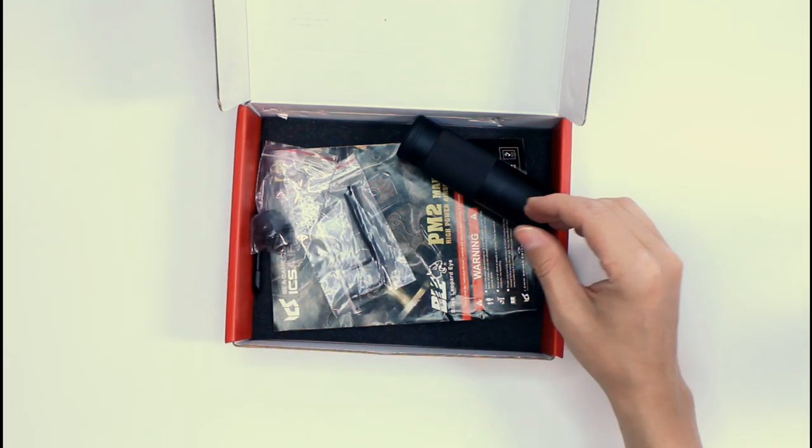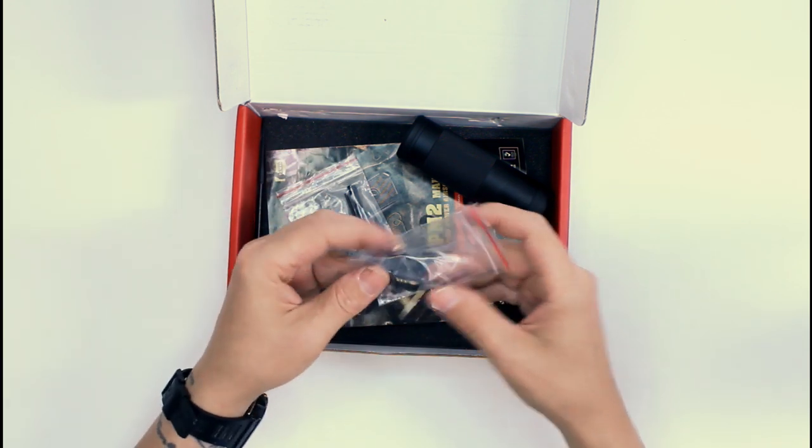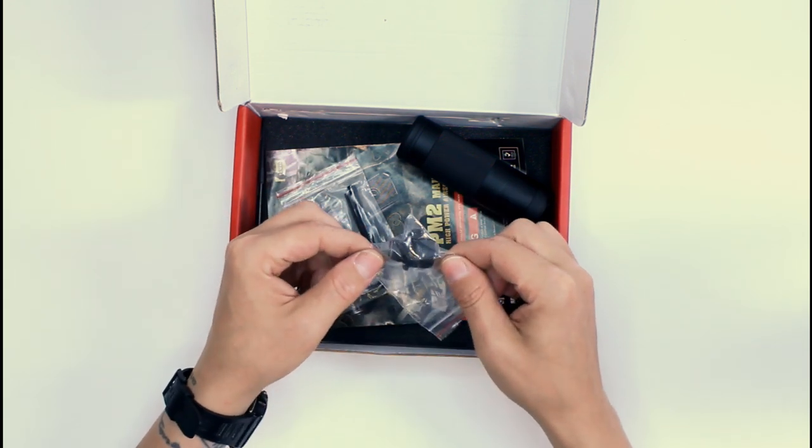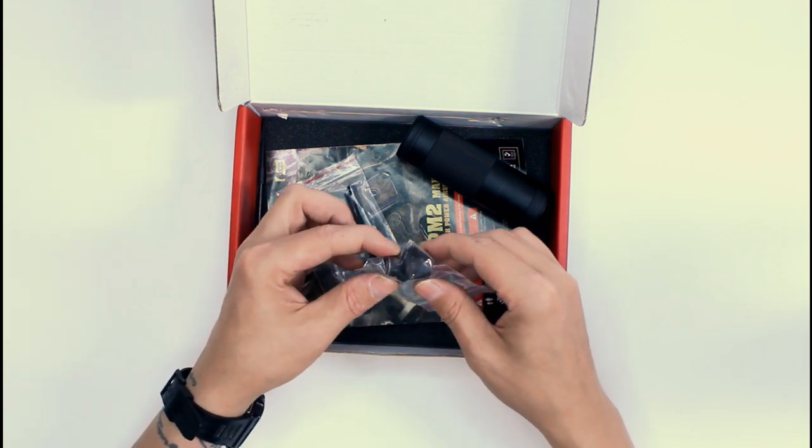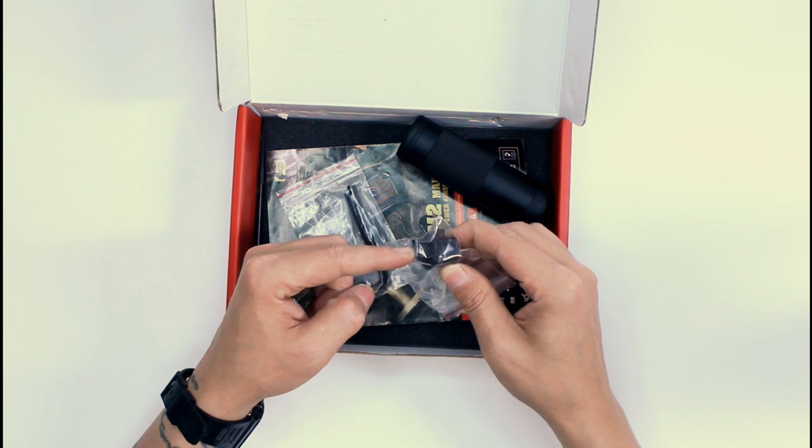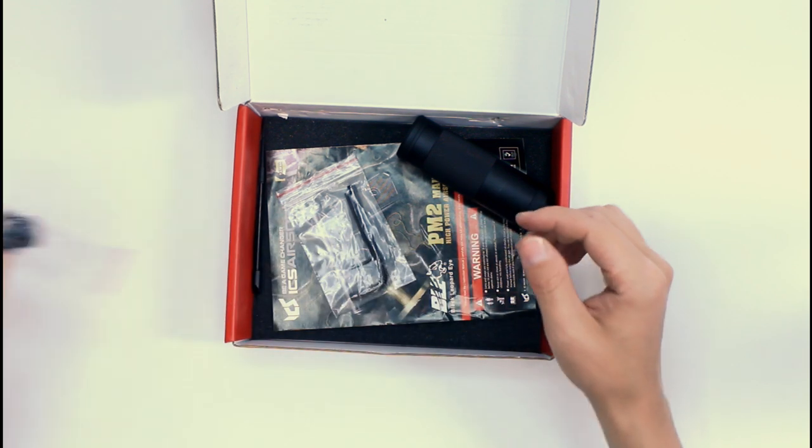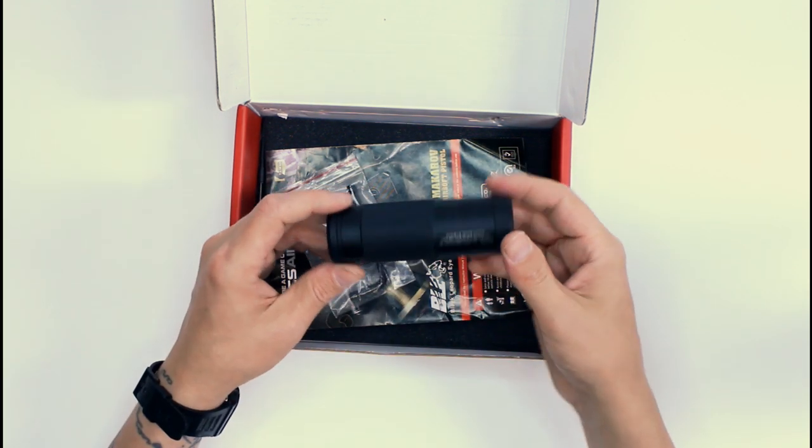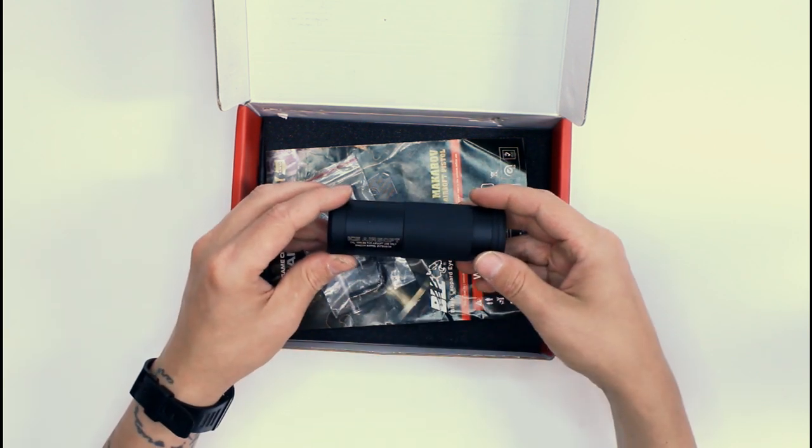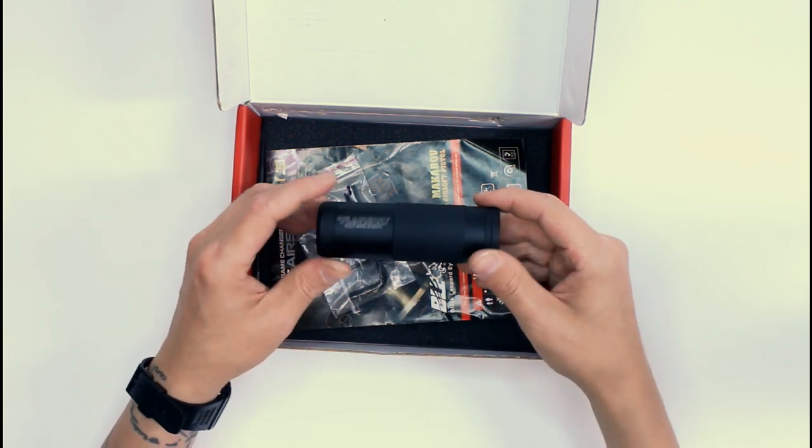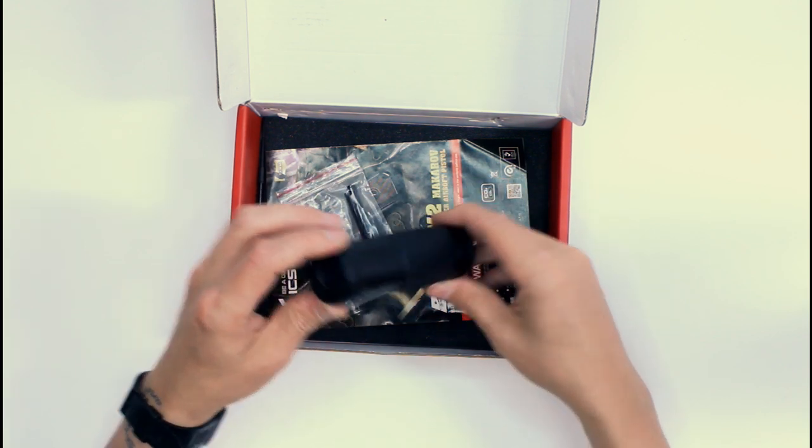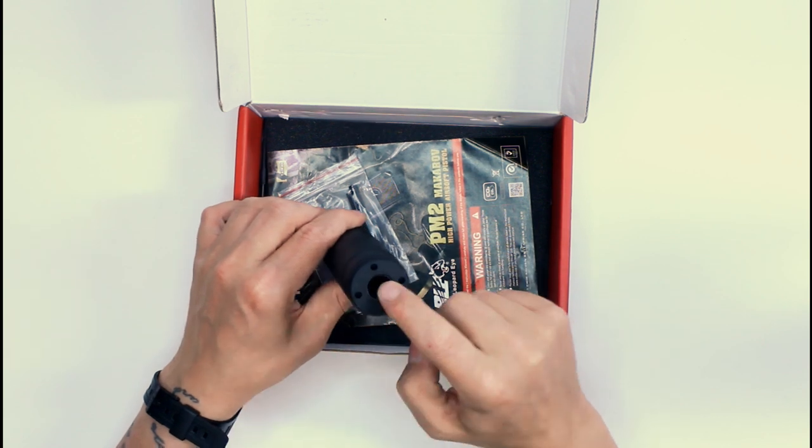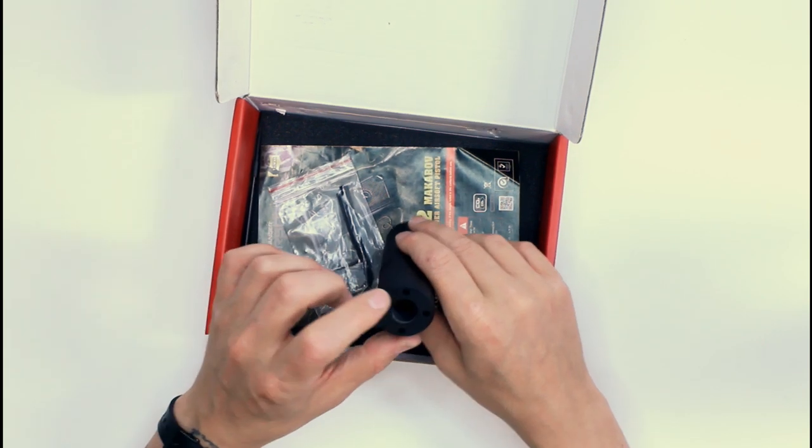Next we have a second muzzle. So out of the box, the PM2 comes fitted with a standard muzzle. This one has a 14 millimeter counterclockwise thread for the addition of this. So this is the ICS shadow barrel extension. It's basically a little suppressor for the Mark 23, which I believe has 14 millimeter counterclockwise and 14 millimeter clockwise threads on there, so you can put it on pretty much anything you want.